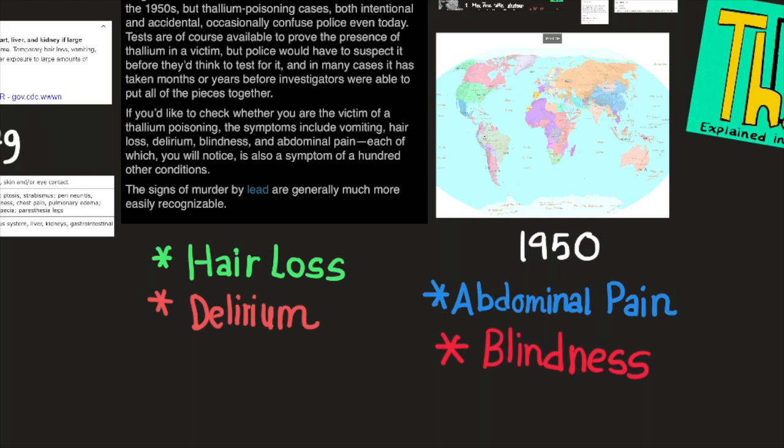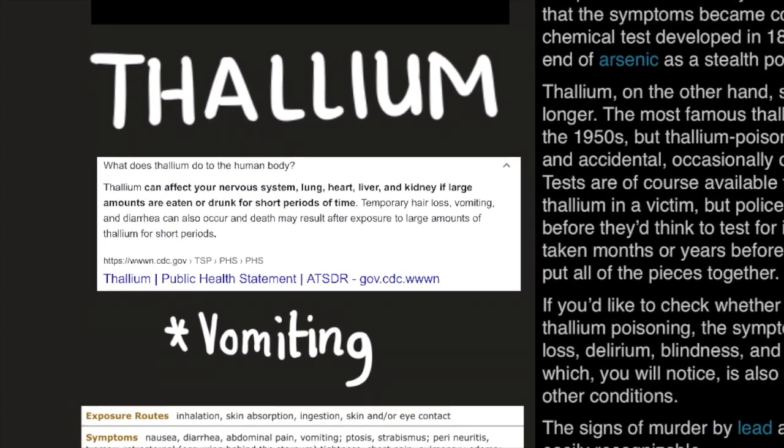each of which you will notice is a symptom of a hundred other conditions. The signs of murder by lead are generally much more easily recognizable, as previously mentioned in the lead video. So what does thallium do to your body? Thallium can affect your nervous system, lung, heart, liver,